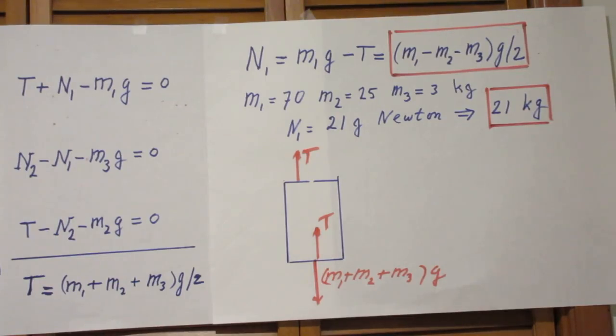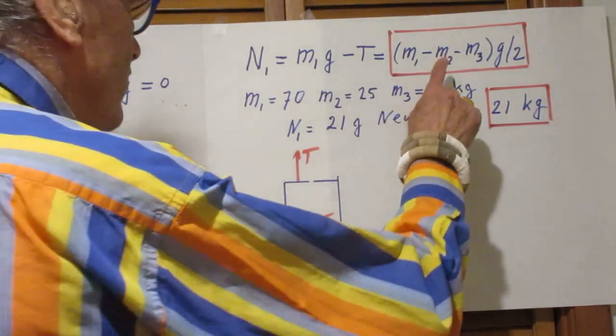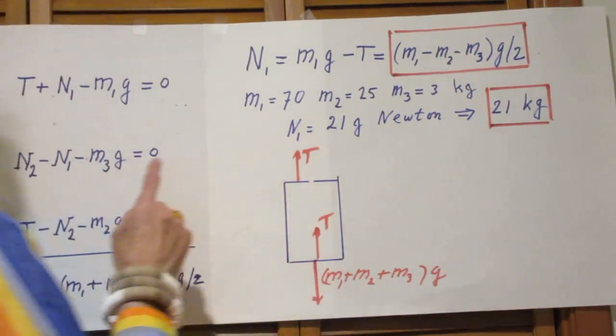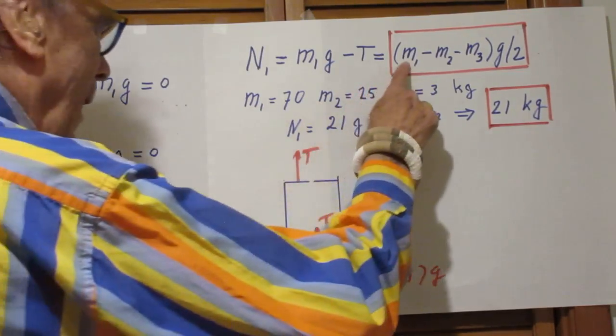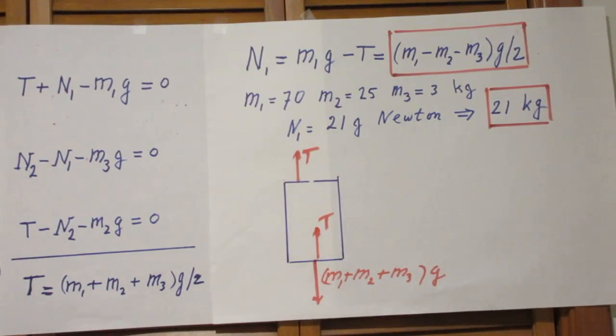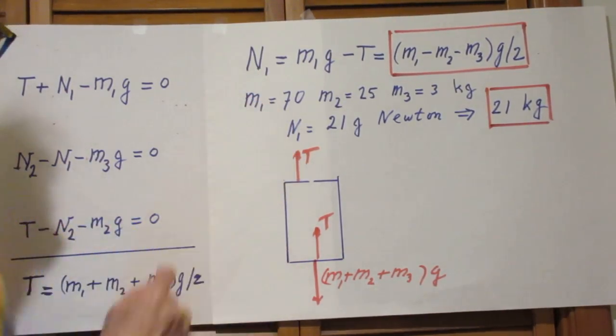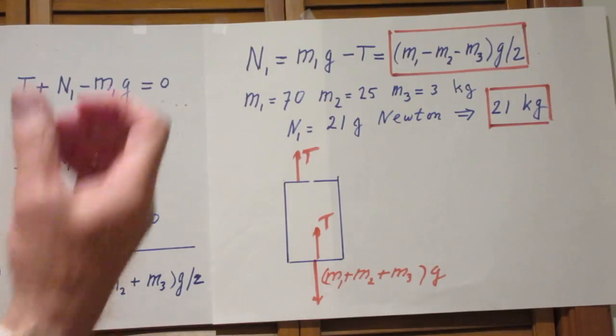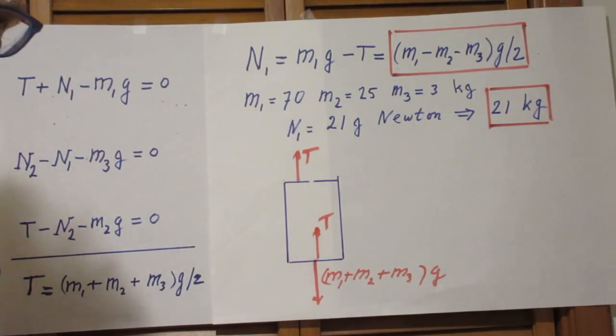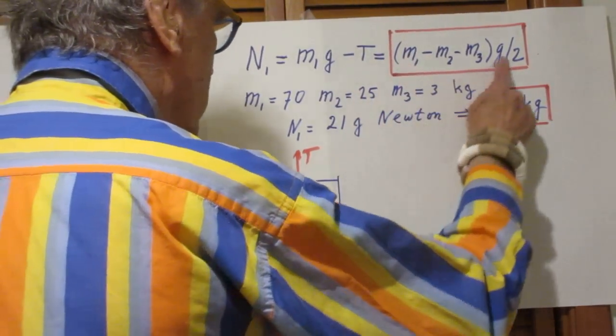I want to point out also one thing which is interesting. That if the sum of m2 and m3, that means if the mass of the scale plus the box is larger than the mass of the person, there is no solution. Because it would mean that N1, which is the reading of the scale, would be negative. It would mean that the scale would be sucking down on the person. This, of course, is unphysical. So, the only way that it would work, that the person could hold the rope in her hand and the whole system is static, is when m1 is larger than the sum of these two.